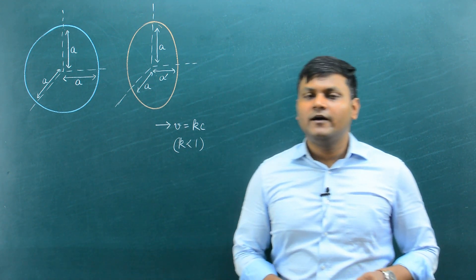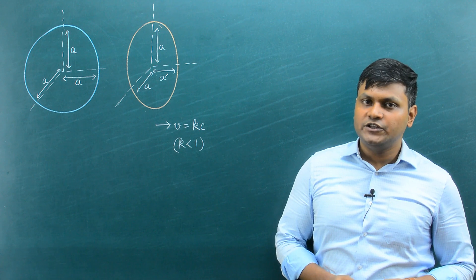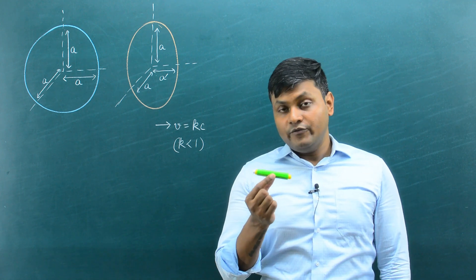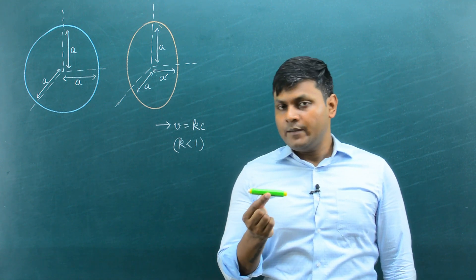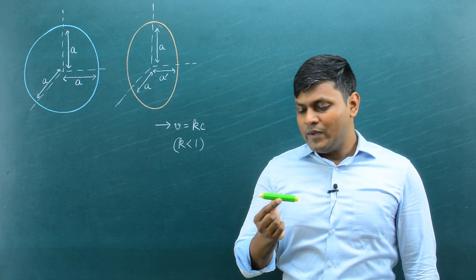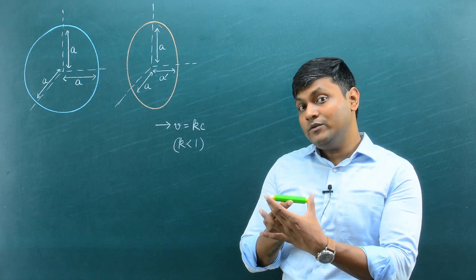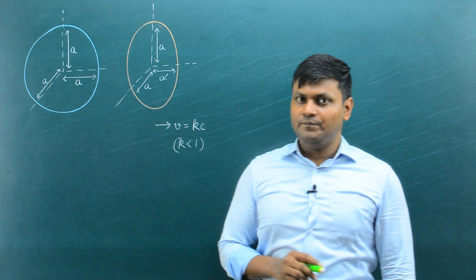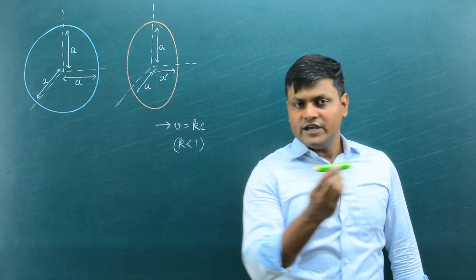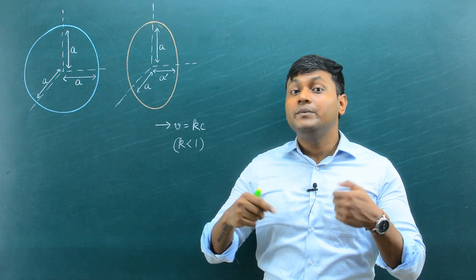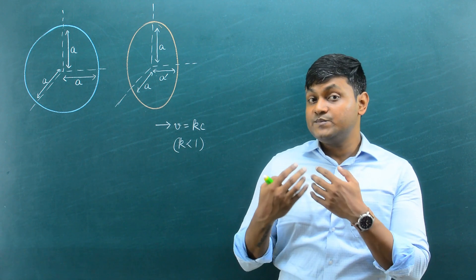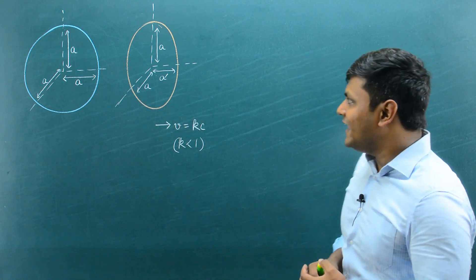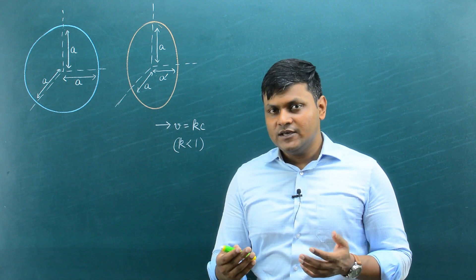Length contraction is one of the famous consequences of the special theory of relativity. If I try to measure the length between two points when I am at rest with respect to the object, and then make the same measurement while in relative motion with respect to that object, those two measurements will be different. In fact, if I am in relative motion with respect to an object, the lengths of that object appear to be contracted.